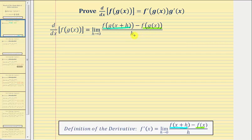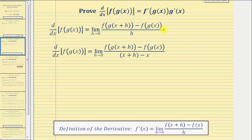Remember, we obtained h by determining the difference of the innermost inputs. So let's make a substitution for h — let's replace h with the quantity x plus h minus x. Remember, h would be the horizontal distance between two points on the function f of g of x.